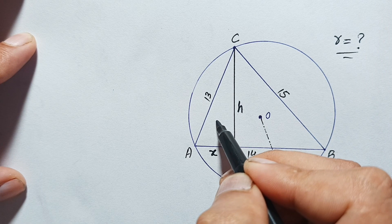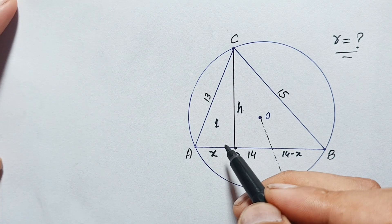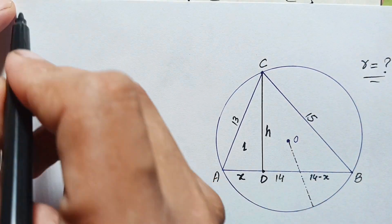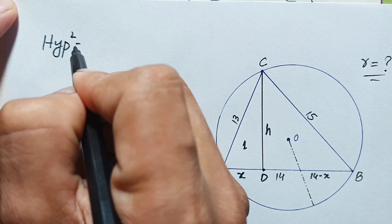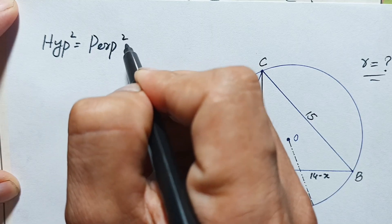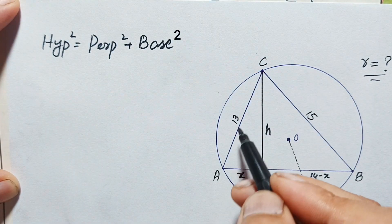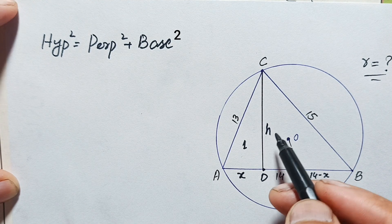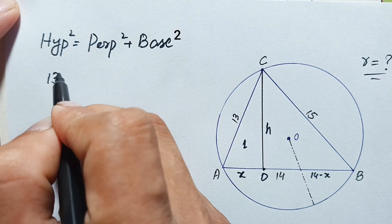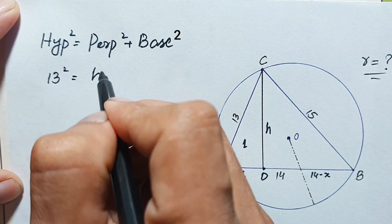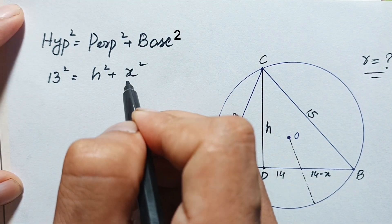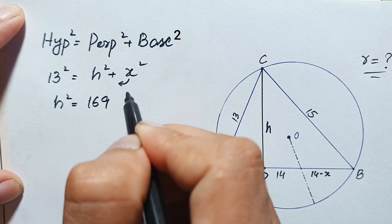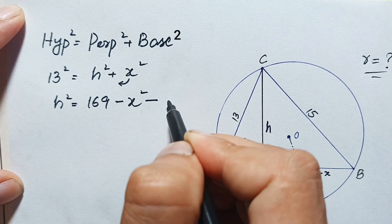Now we will use the Pythagorean theorem on triangle ACD. The hypotenuse is 13, the base is x, and the perpendicular is h. So 13 squared equals h squared plus x squared, which gives us h squared equals 169 minus x squared. Let this be Equation 1.